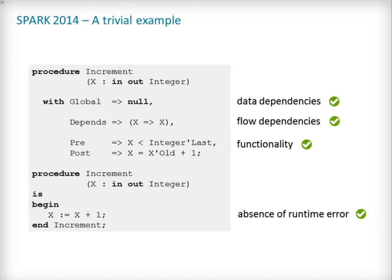Functional properties of increment are specified using the pre and post aspects of ADA 2012. Increment can only be called if the value of x before the call is smaller than Integer'Last. It is necessary to ensure that the addition operation performed in the sub-program body will not overflow. Finally, we specify that increment does indeed perform an increment of x — that is, the value of x after a call is one more than its value before the call. The Spark 2014 verification tools can verify all of these contracts and additionally make sure that no error is raised at runtime when executing increment's body.